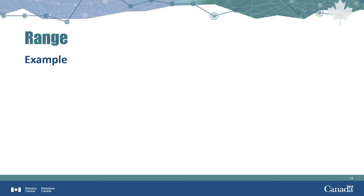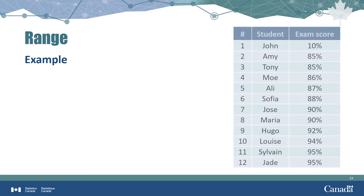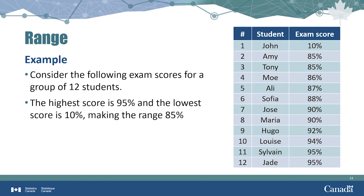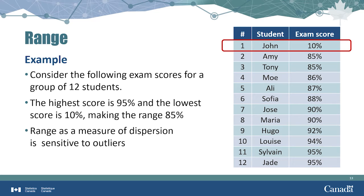Now let's look at a similar example with one major difference. Here we have exam scores from the same group of 12 students. The highest exam score is again 95%, but the lowest is now 10%, making the range 85% — a very wide spread. Upon closer inspection, we see one student, John, did quite poorly while everyone else did very well. This makes John's score an outlier, since 11 out of 12 students scored between 85% and 95%. Because the range compares the smallest to largest values, it can be a misleading measure when outliers are present.